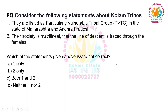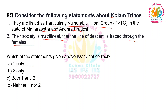Moving to the next question. Consider the following statements about Kolam tribes. They are listed as a particularly vulnerable tribal group in the state of Maharashtra and Andhra Pradesh. Their society is matrilineal, meaning the line of descent is traced through the females. Which of the statements given above are not correct? One only. Two only. Both one and two. Neither one nor two.